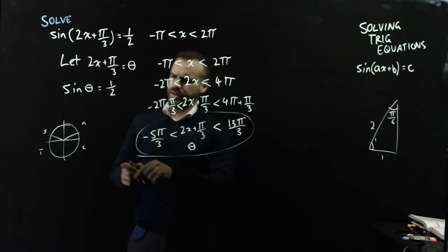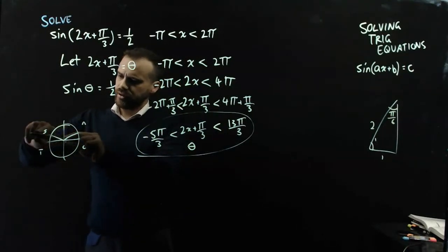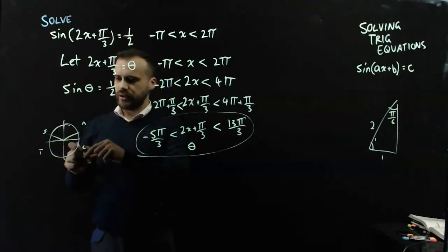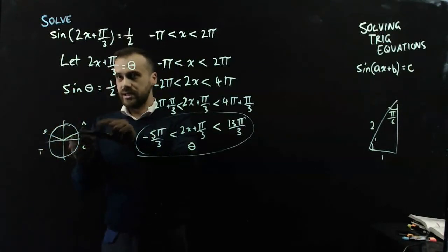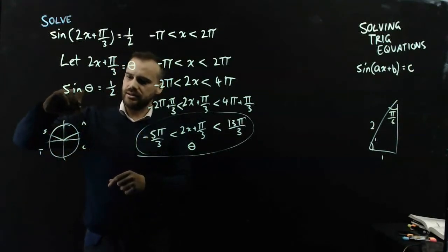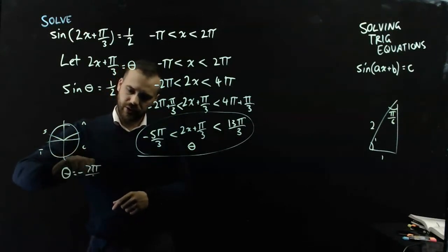Negative 5pi on 3, let's see. Pi on 3, 2pi on 3, 3pi on 3, 4pi on 3, 5pi on 3. Alright, I passed through one of those there, so my negative answer is going to be negative 7pi on 6. So theta equals negative 7pi on 6. That's my only negative answer.